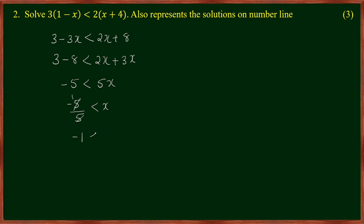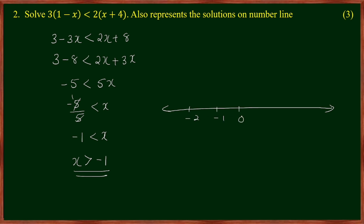So minus 1 is less than x. This is the same thing: x is greater than minus 1. Let's get that number: minus 2, minus 1, 0, 1, 2, 3. That is minus 1. We are using the whole numbers. So minus 1 is a whole number.